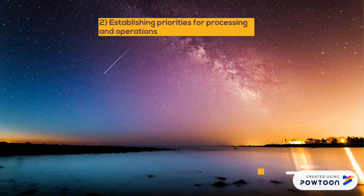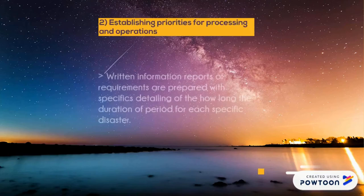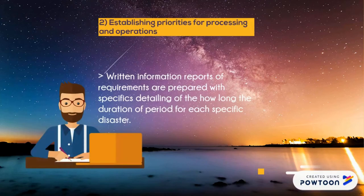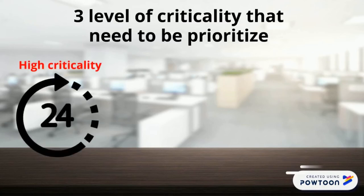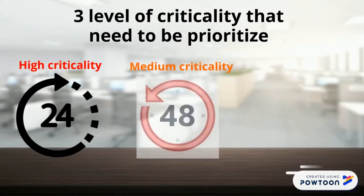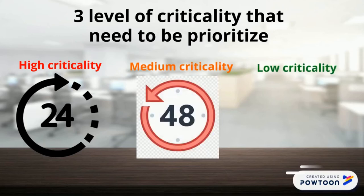The second step is establishing priorities for processing and operations. Written information reports are prepared detailing how long the duration of the period is for each specific disaster. There are three levels of criticality: high criticality — business process must be recovered within 24 hours; medium criticality — business process must be recovered within 48 hours; low criticality — can wait many days or even weeks for recovery.